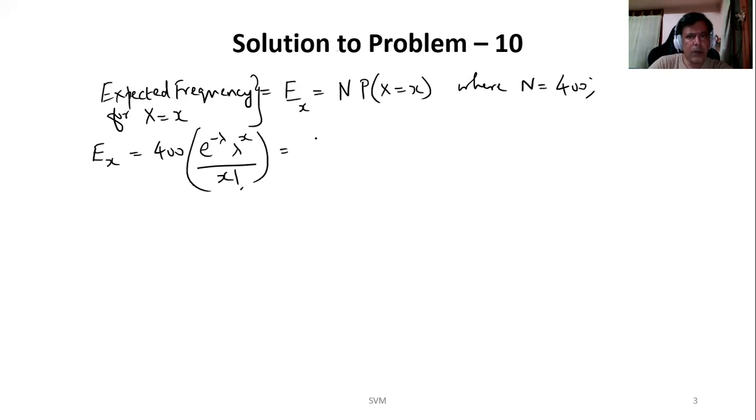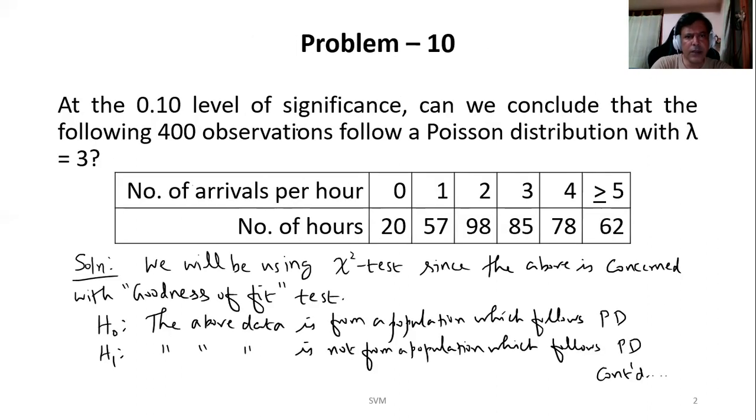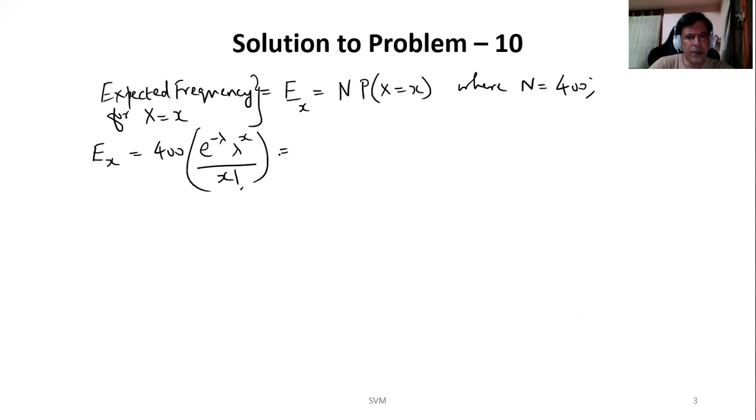Now lambda is given in the question as 3, we will be substituting 3. So 400 times e power minus 3, times 3 power x by x factorial.